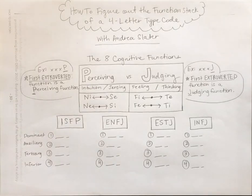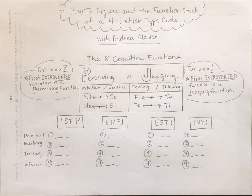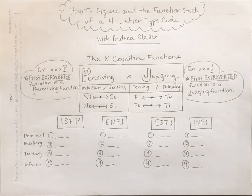I'm going to talk about how to figure out the function stack of a four-letter type code. A four-letter type code, like ISFP or ENTJ, represents the function stack, and that can be determined by a few simple steps.